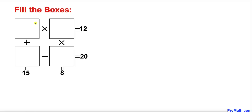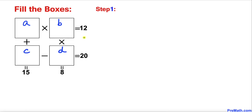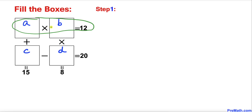We are going to label these boxes. I'm going to label this one A, this box B, this one C, and this one D. Let's focus on the multiplication operations first. We are going to focus on the top boxes first: A times B equals 12.